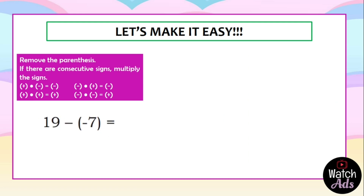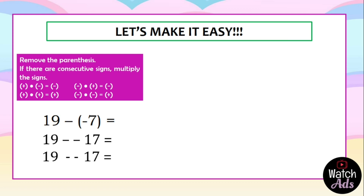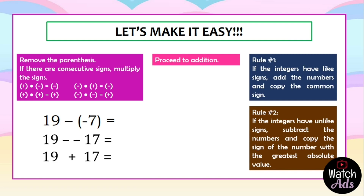Let's have another example: 9 minus negative 7. We have parentheses — remove them. We end up with 19 minus negative 17. We have two negative signs — we change them into positive. Now we have 19 plus 17. We proceed to addition — like signs: 19 plus 17 is equal to 36. That's our final answer.